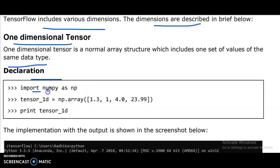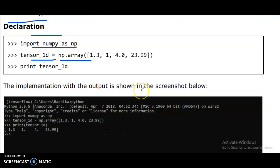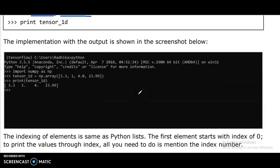Declaration: import numpy as np. t tensor underscore 1d equal to np array of 1.3, 4, 5, 23.99. Print tensor underscore 1d. The implementation type of output is shown in the screenshot below.